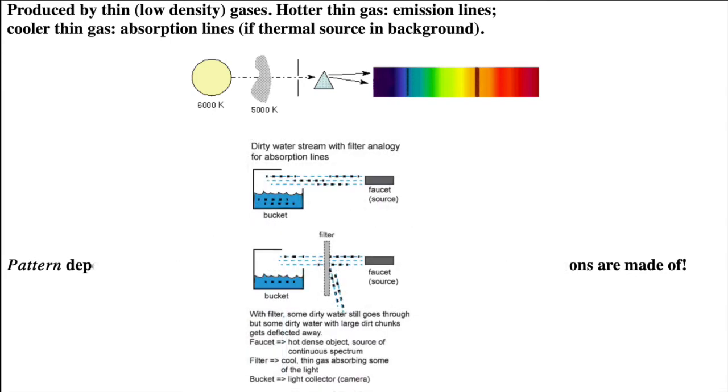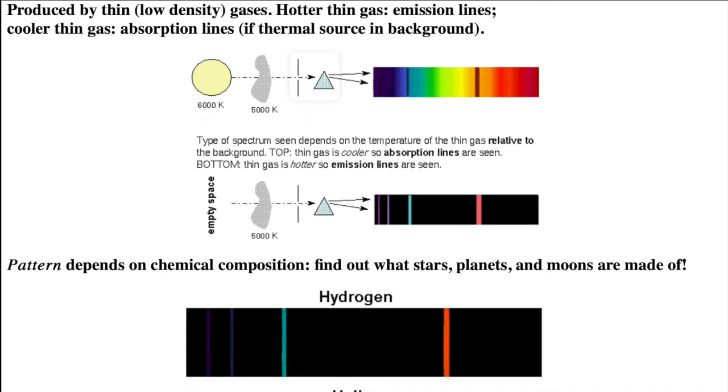In the textbook, I use the analogy of a dirty water stream with a filter to describe what's going on with absorption line spectrum. The faucet produces a stream of dirty water with all different sizes of dirt chunks in it. It is analogous to the hot dense object producing the full rainbow of colors. The dirty water is collected by a bucket which is analogous to your camera or eye. If you put a filter in the path of the dirty water stream, dirt chunks of a particular size are blocked from reaching the bucket. The filter is analogous to the cool thin gas cloud that absorbs certain specific wavelengths of light. Much less of those particular colors or wavelengths reach your camera or eye.